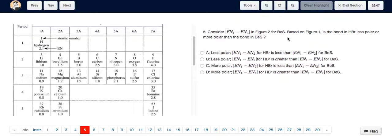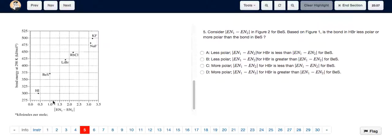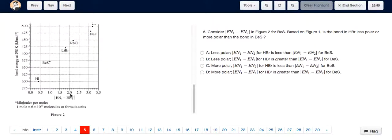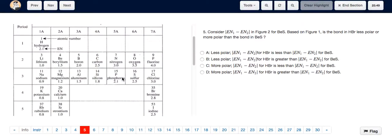So we have to figure out the value of modulus EN1-EN2 for BeS, which is beryllium sulfur, and HBr, which is hydrogen bromide. For beryllium sulfur, it's already given to us in figure 2 directly that the modulus value of EN1-EN2 is 1.